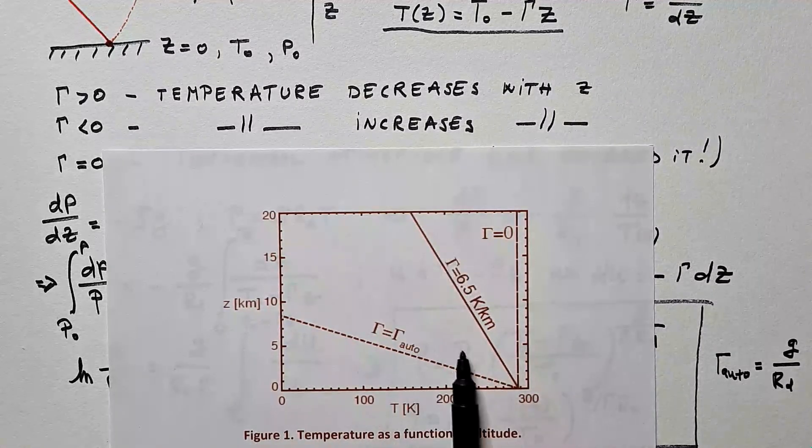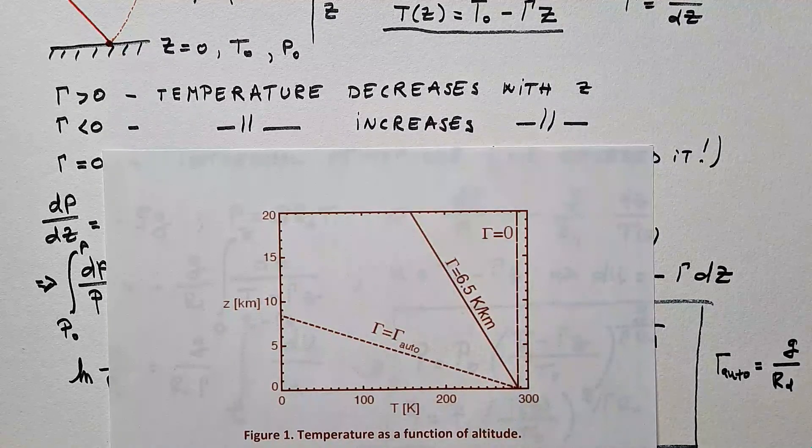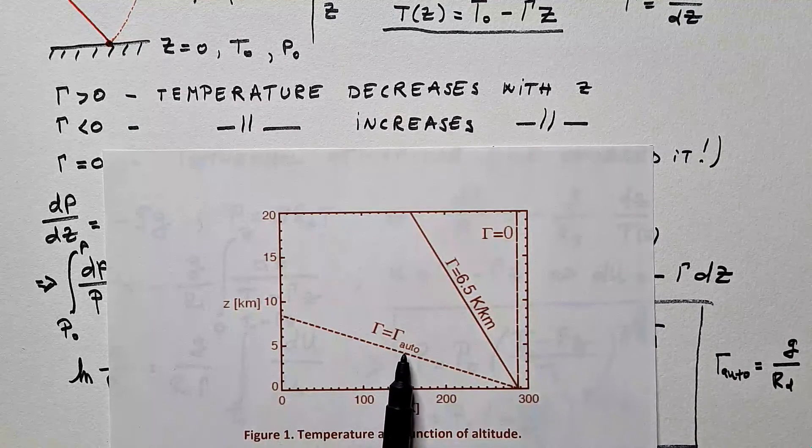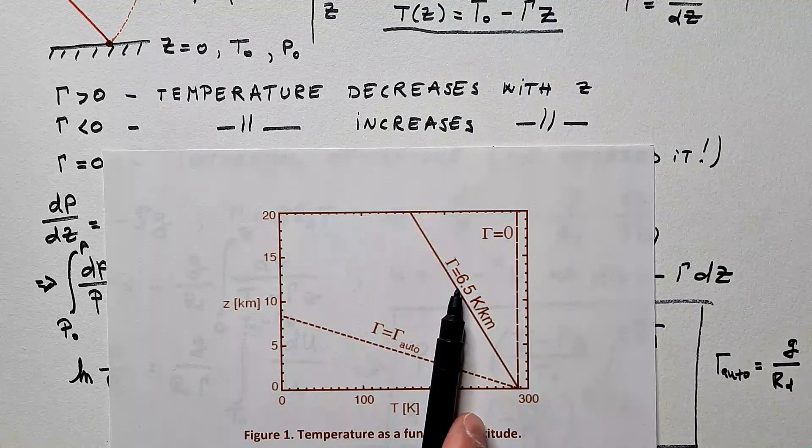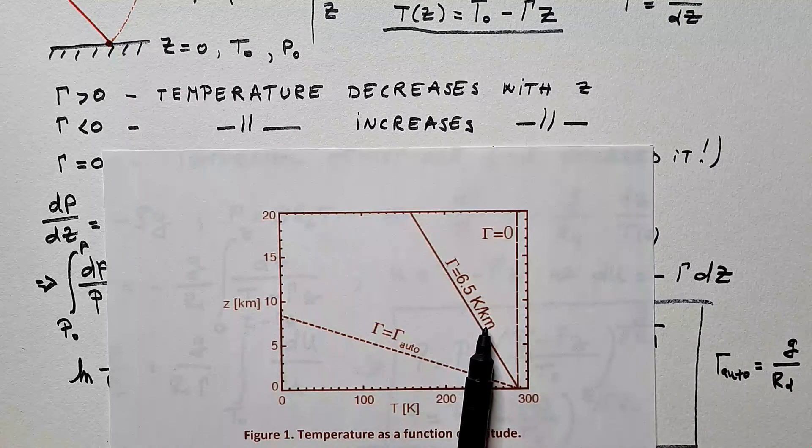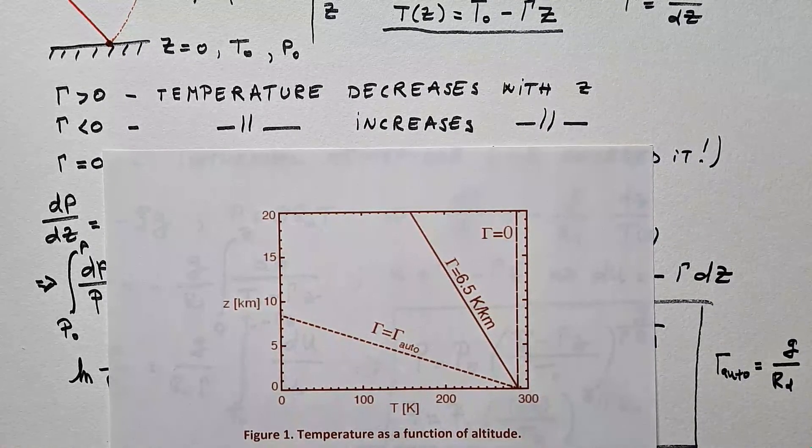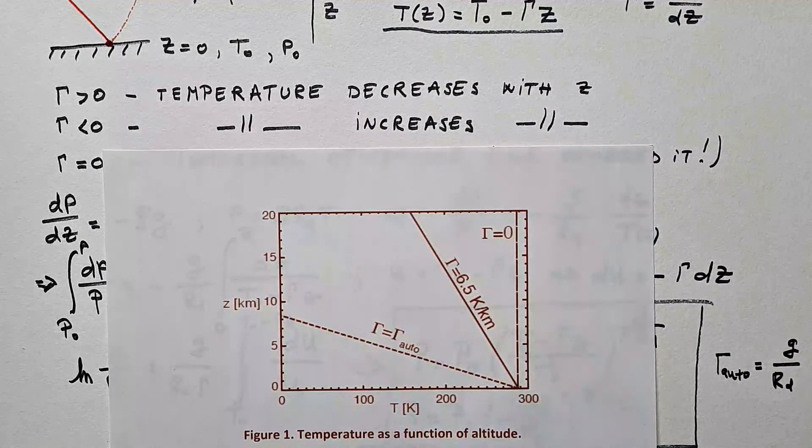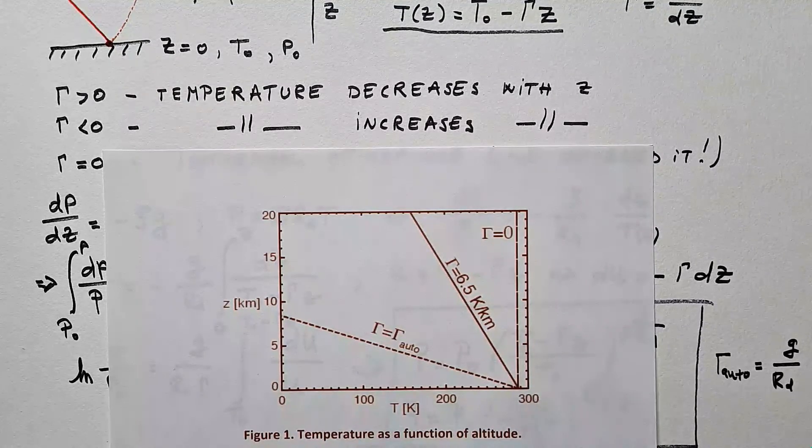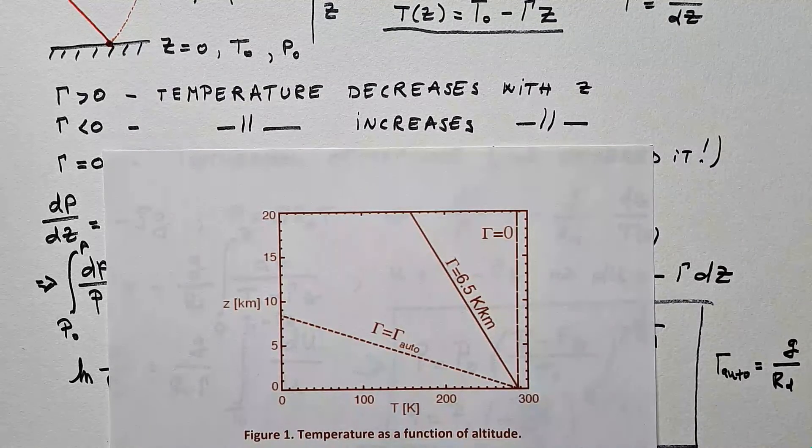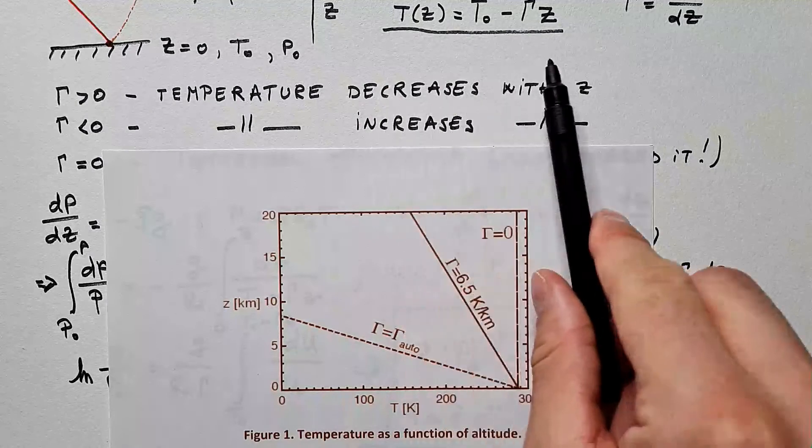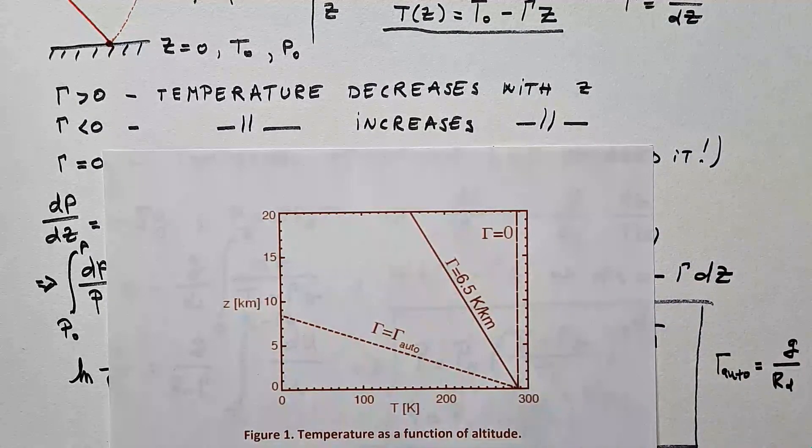That's very fast decrease of temperature with height. Today, we covered this case when we have some generic γ, not necessarily γ_auto. And here is 6.5 Kelvin per kilometer.